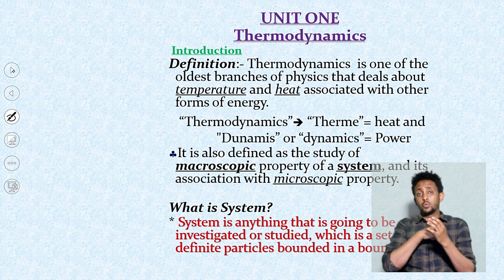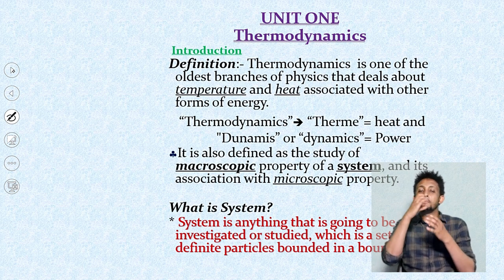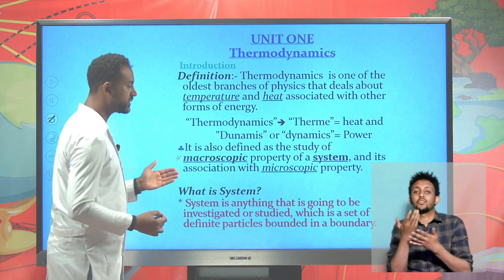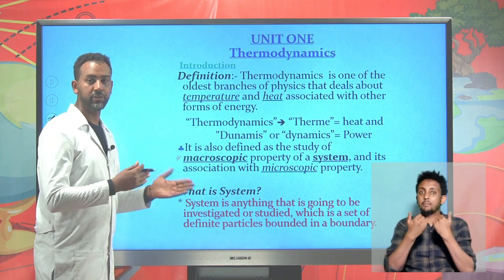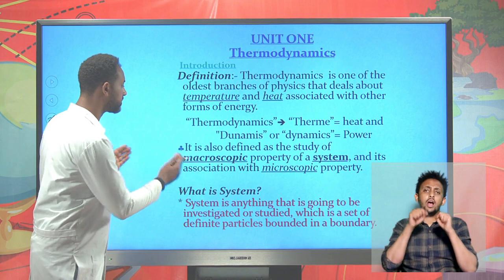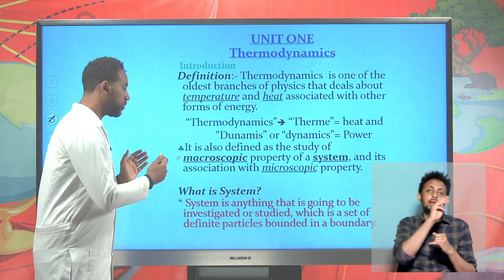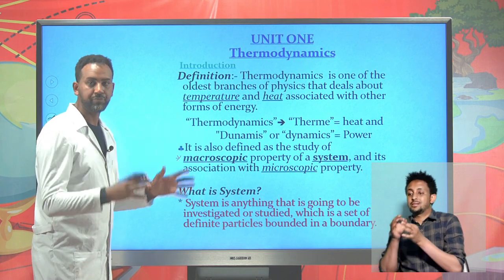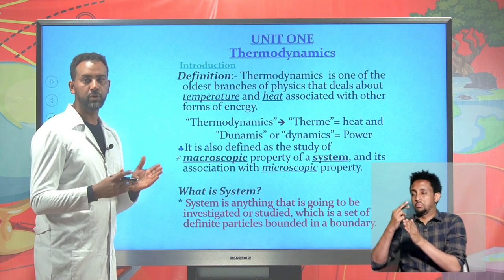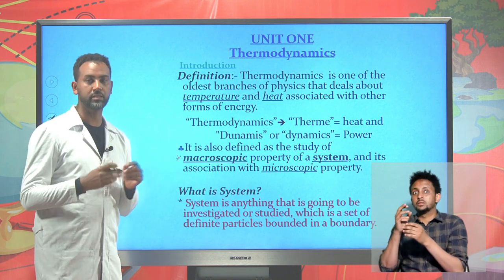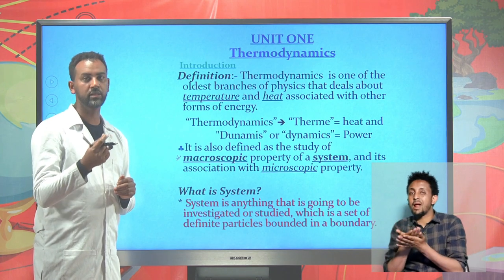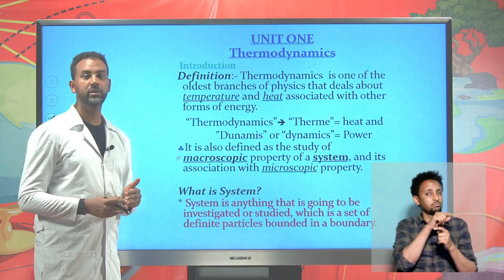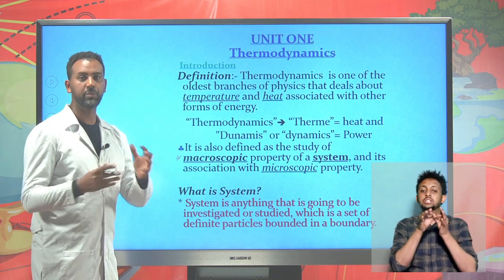It's also possible to define thermodynamics as the study of macroscopic properties of a system. A given system might have different properties, which we can categorize as macro and microscopic. Macroscopic means that the property describes the system as a whole, like volume, rather than describing a single particle. Microscopic properties describe the individual particles found in a system, like speed.